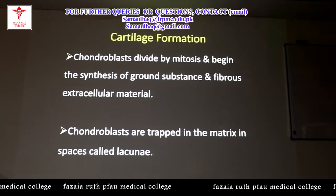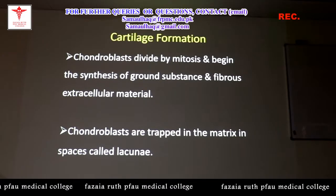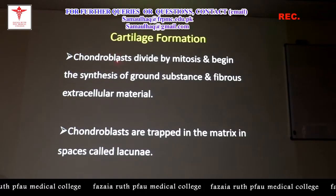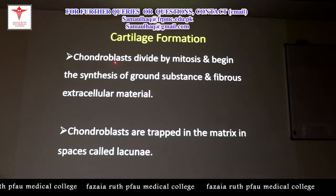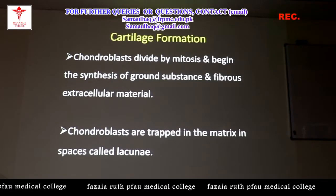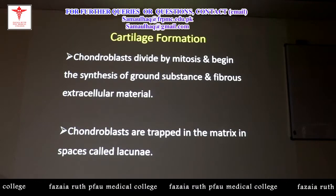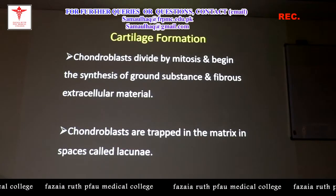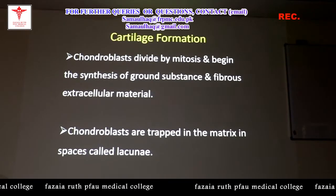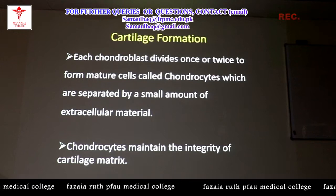The main cells of cartilage are known as chondroblasts. The term 'chondro' means cartilage and 'blast' means forming, so chondroblasts are cartilage-forming cells. Chondroblasts divide by the process of mitosis and begin the synthesis of ground substance and fibrous extracellular material. These chondroblasts are then trapped in the matrix in spaces called lacunae — small spaces within the matrix.